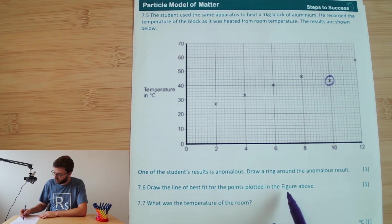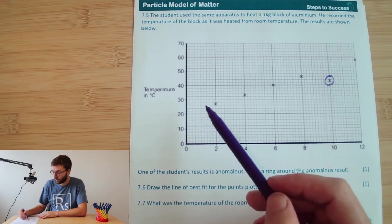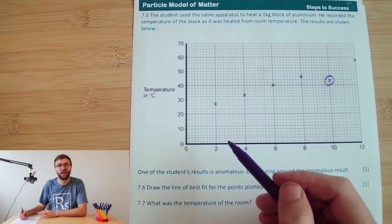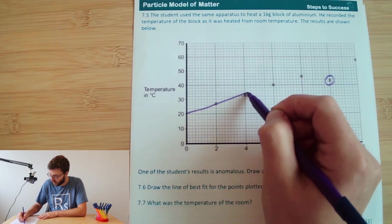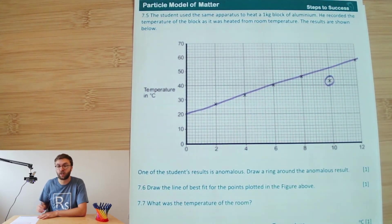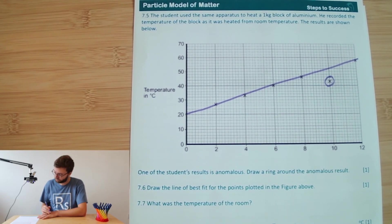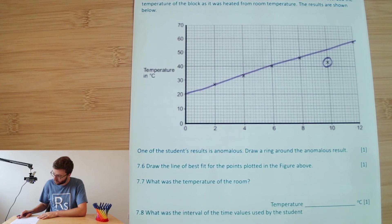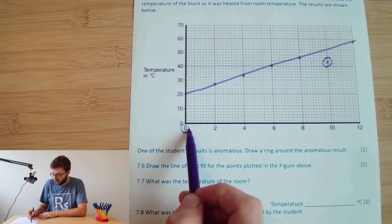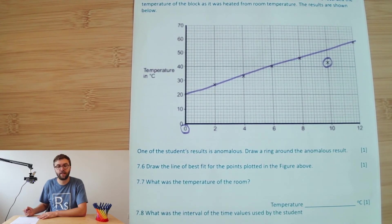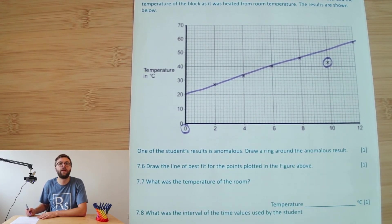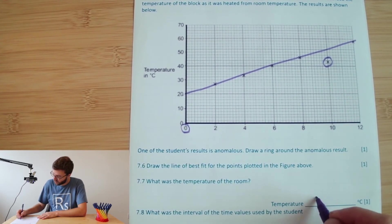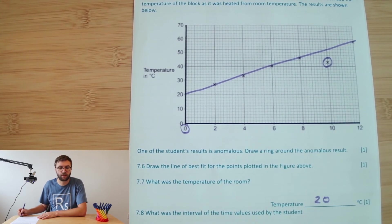Draw the line of best fit for the points plotted in the figure above. Okay, so we're going to look at this graph. We can clearly see it's a straight line. If we were in an exam, we'd be using a ruler. I've not been prepared and haven't got a ruler. So I'm going to do the best that I can do freehand to draw a nice straight line between those results. What was the temperature of the room? So the temperature of the room would have been what the block would have been at zero. Because at zero, it's not been heated. So it'll have been at the temperature of the room, presumably if it had been left within the room for a while. So if we go up from zero, you can see that quite clearly, this line crosses 20 degrees Celsius. So therefore, that's our temperature of the room.